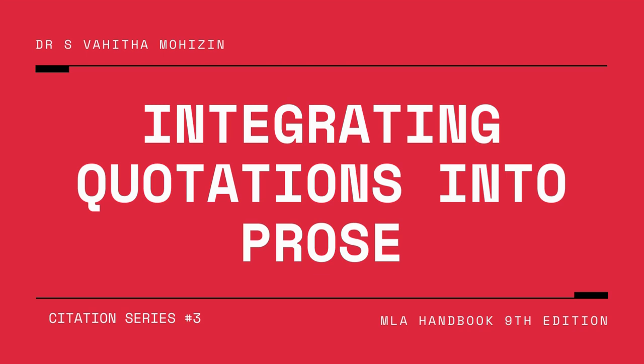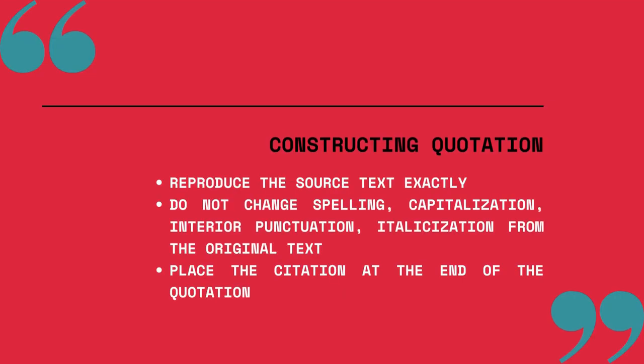This book follows the rules of the ninth edition of the MLA handbook. So what do you do to construct quotations? Something that you have to keep in mind is that you have to reproduce the source text exactly — without any changes. Do not change spelling, capitalization, interior punctuation, or italicization from the original text. You have to place the citation at the end of the quotation for reference.